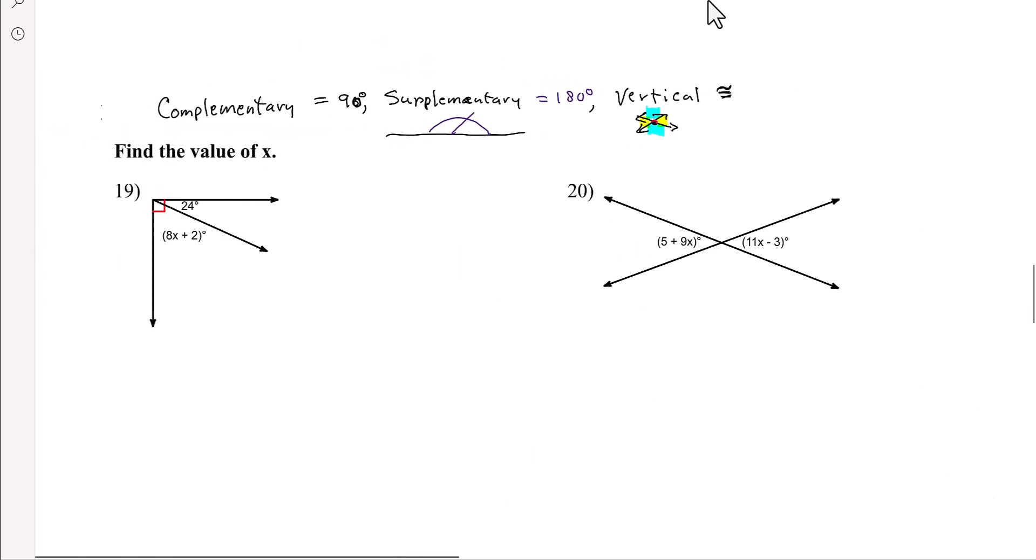And then, if you have adjacent angles, adjacent angles share a ray. So for example, this angle right, so maybe that angle ends, so this is the angle right there.